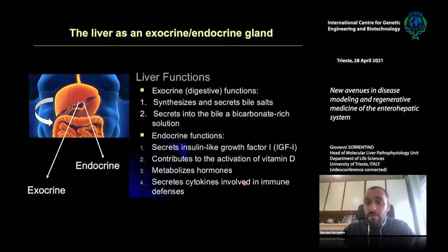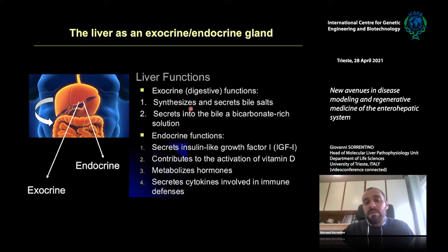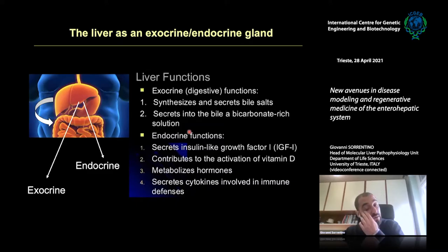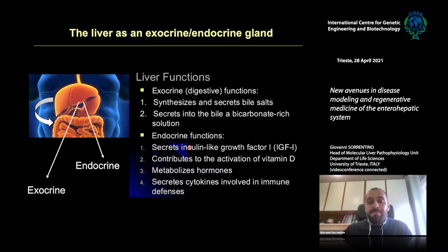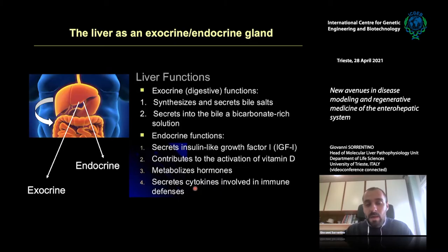The liver is not only a filter — it is a real gland with exocrine and endocrine functions. Its exocrine role includes synthesis and secretion of bile acids, critical for digestion and nutrient uptake. Its endocrine functions include biosynthesis and secretion of hormones such as insulin-like growth factor. The liver also activates vitamins, metabolizes hormones, and secretes signaling molecules such as cytokines that control immune defense.